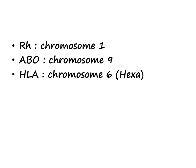The next group is RH, ABO, and HLA. RH is only a two-letter word, so we give it chromosome 1. ABO is a three-letter word, and three squared is nine, so ABO is chromosome 9.